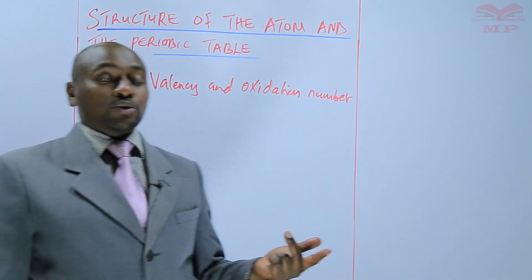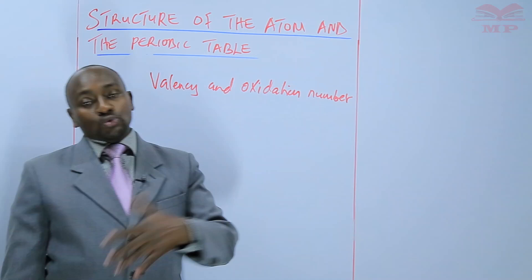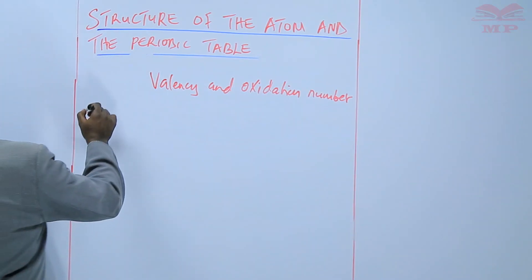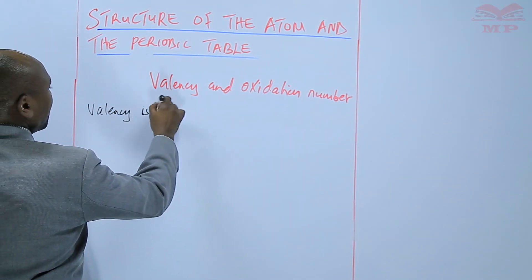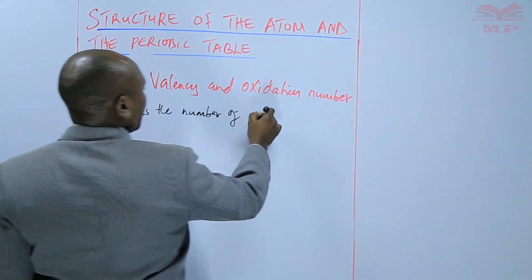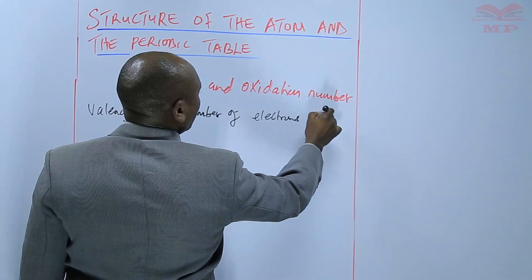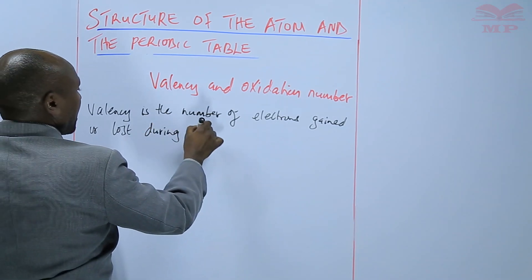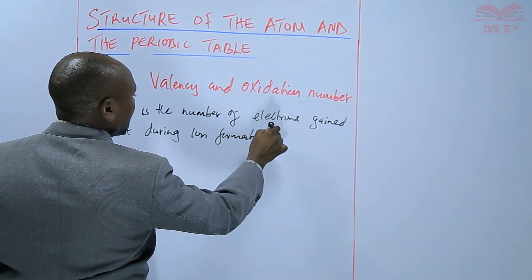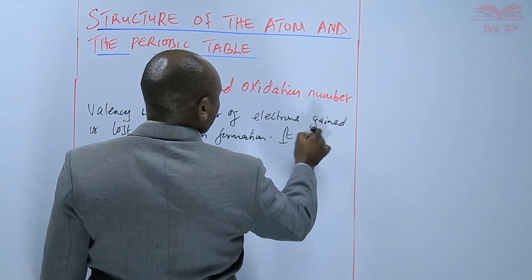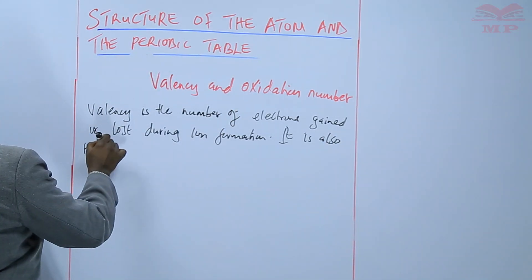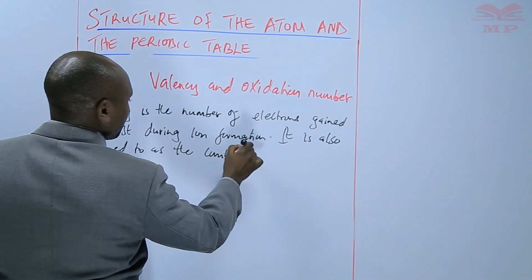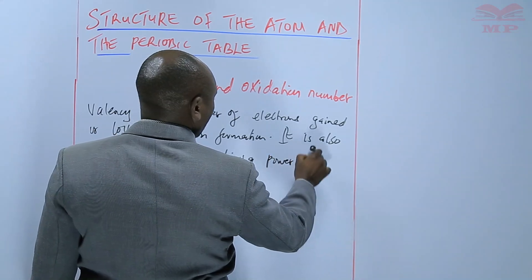If an atom gains 1 electron, the valency is 1. If it loses 1, the valency is 1. If it gains 2, the valency is 2. If it loses 2, the valency is still 2. So valency is the number of electrons gained or lost during ion formation. It is also referred to as the combining power of an element.